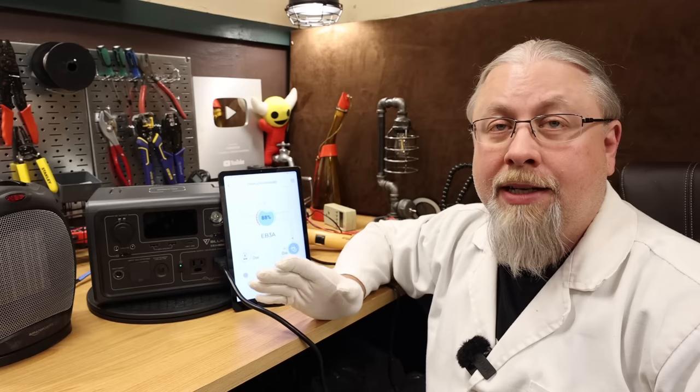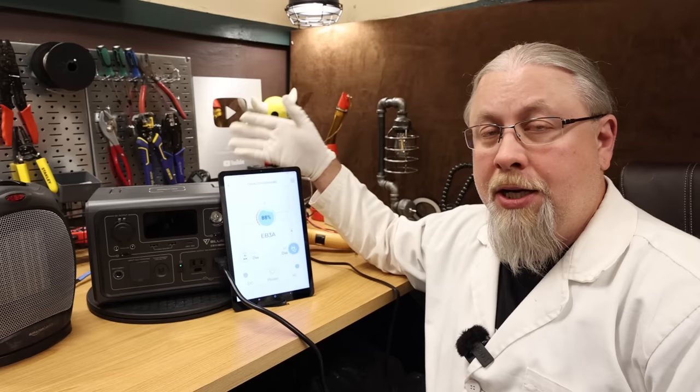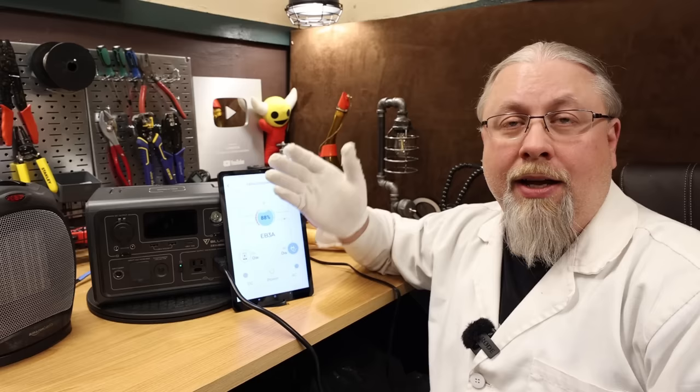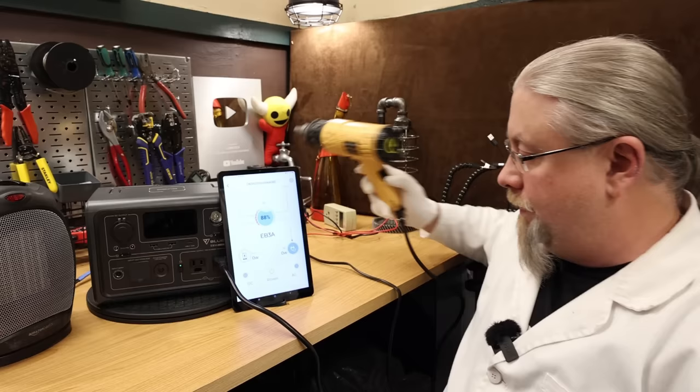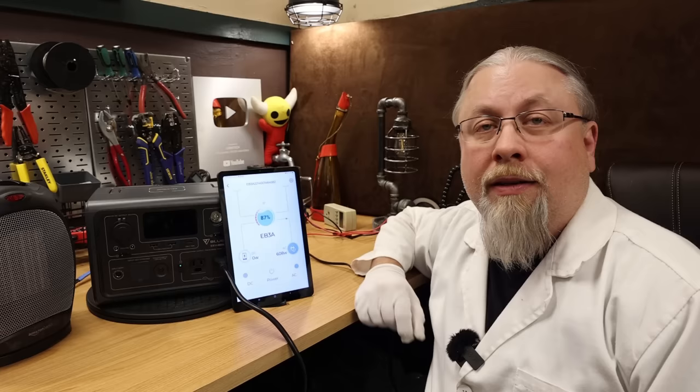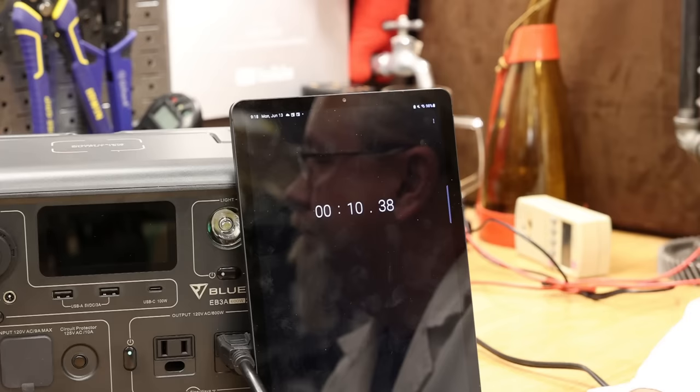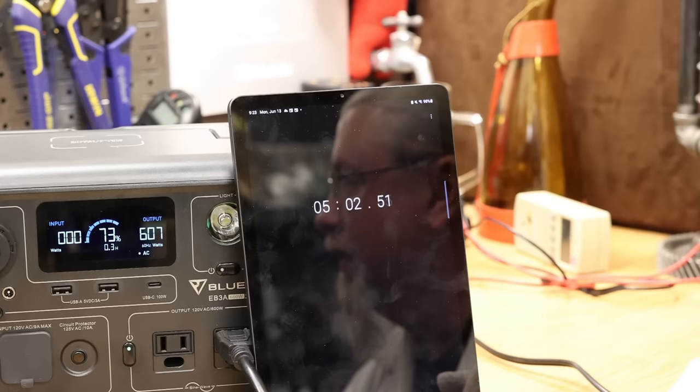This next test is the heat capacity test or what I call the heat soak test, where I'll run it at its rated capacity, which is 600 watts, for at least five minutes. Make sure it doesn't overheat, shut down, throw any alarms, start smoking, drinking, doing drugs. All right, there it is running 600 watts. Let's start the timer. All right, there you have it. It's running five minutes at 609 watts. No problem.